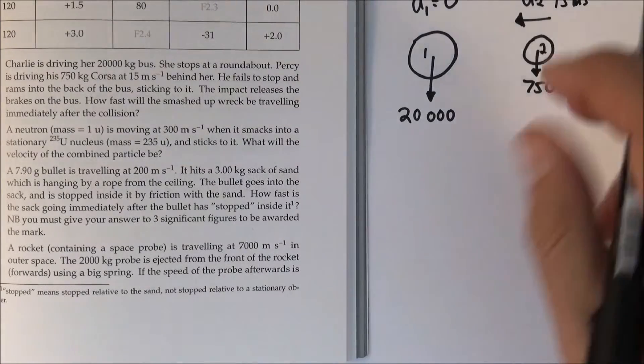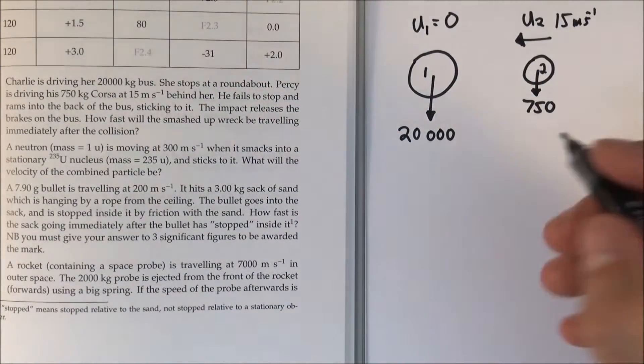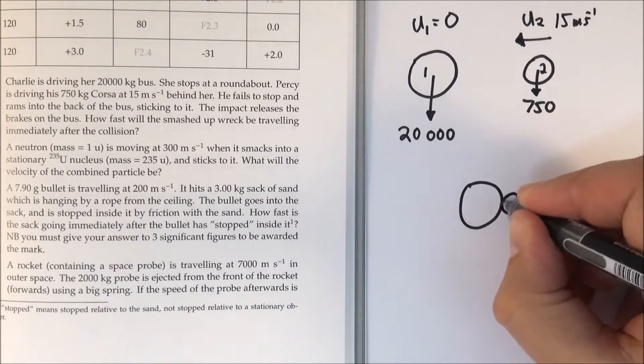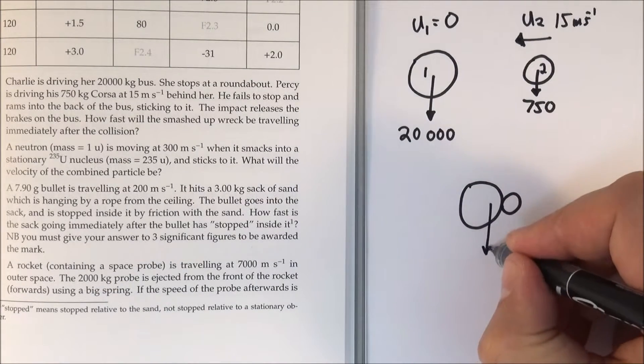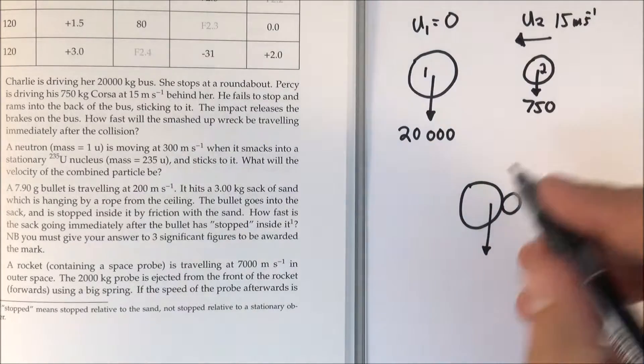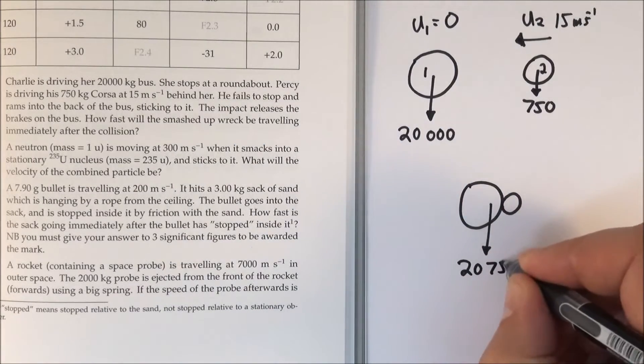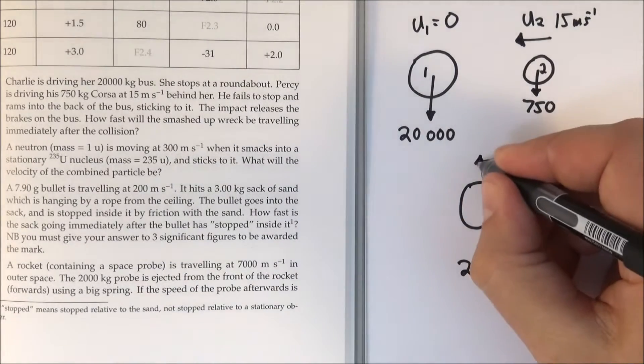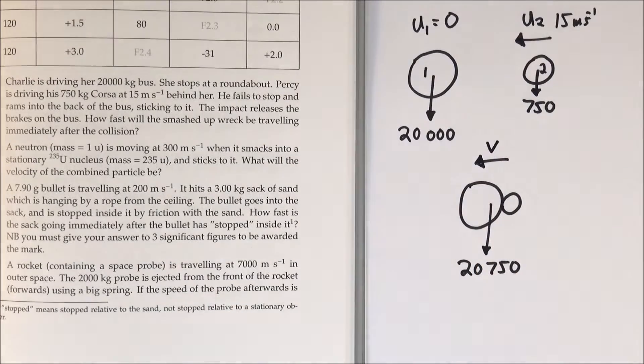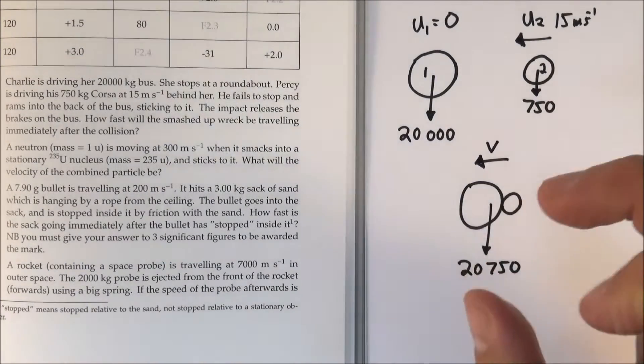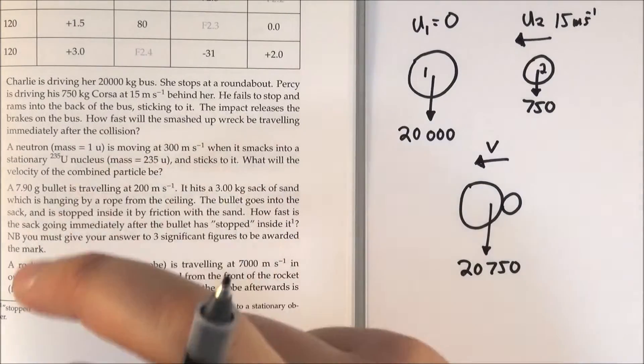Okay so I've basically drawn the diagram and after the collision the two things move off together, like a sort of sideways snowman. Their combined mass is going to be 20,000 plus 750 and what we want to know is their combined velocity afterwards. So this is the diagram of what we've got in the question.